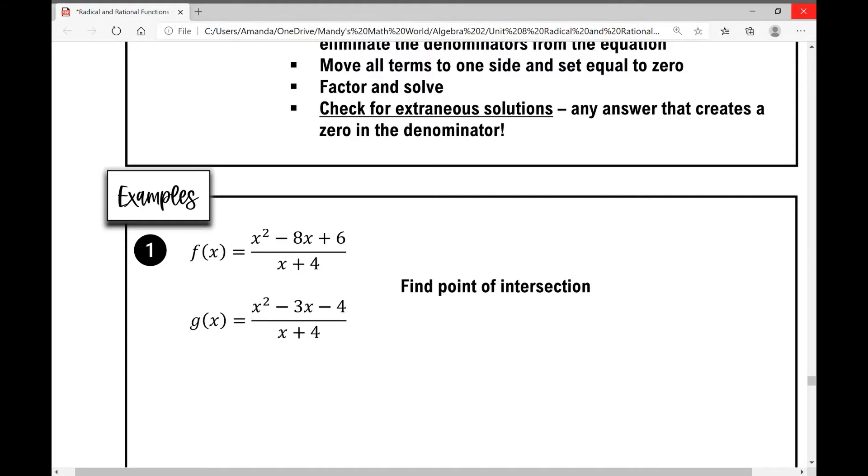So the point of intersection would be when f of x is equal to g of x. So we're going to set these two equations equal to each other. That's going to be x squared minus 8x plus 6 over x plus 4 and we're going to set it equal to x squared minus 3x minus 4 over x plus 4.